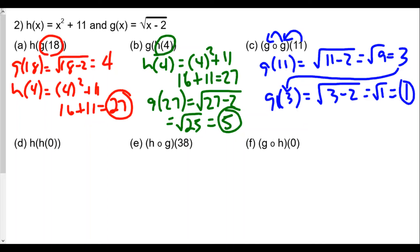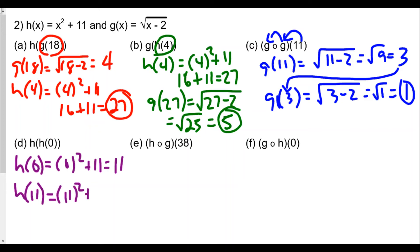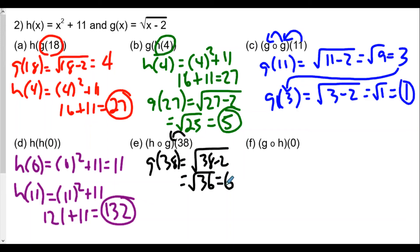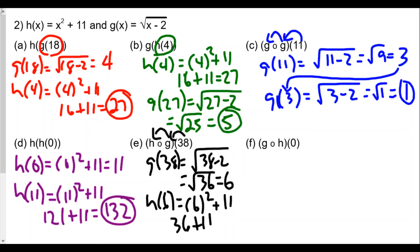Next is h of h of 0. h of 0 is 0 squared plus 11, equal to 11. Then we plug that 11 into h. h of 11 is 11 squared plus 11, which equals 121 plus 11, equal to 132. For the next one, 38 goes into g: g of 38 is the square root of 38 minus 2, which is the square root of 36, equal to 6. Then h of 6 is 6 squared plus 11, or 36 plus 11, which equals 47.